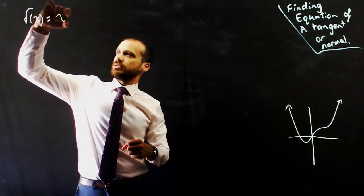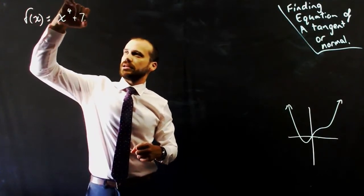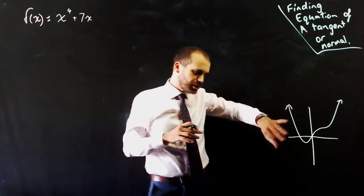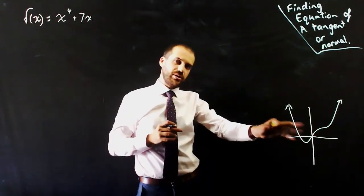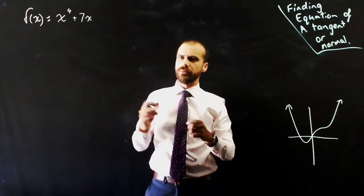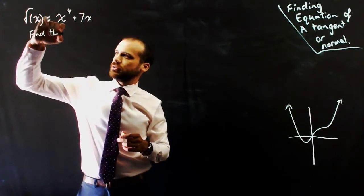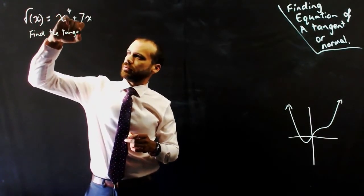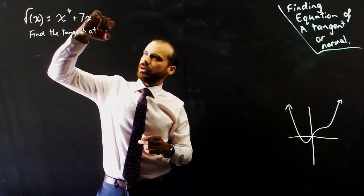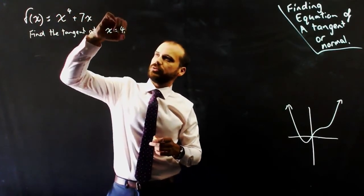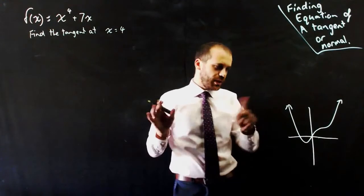So my function is going to be f(x) = x⁴ + 7x. It actually looks something like the thing I've drawn there. And I'm going to find the tangent at x = 4.